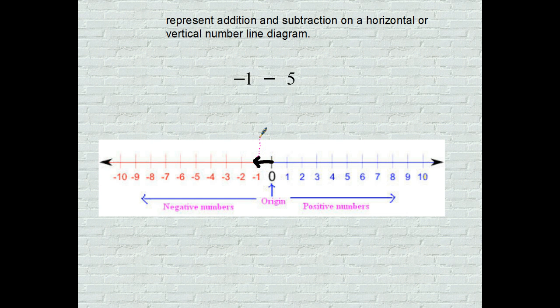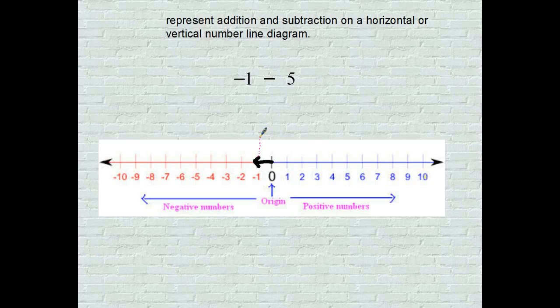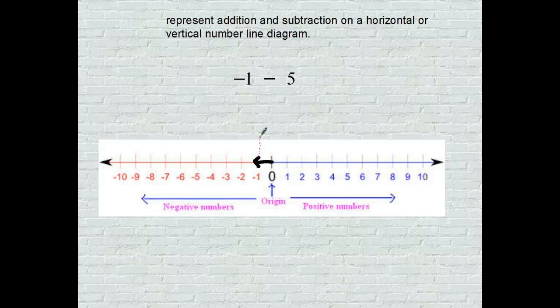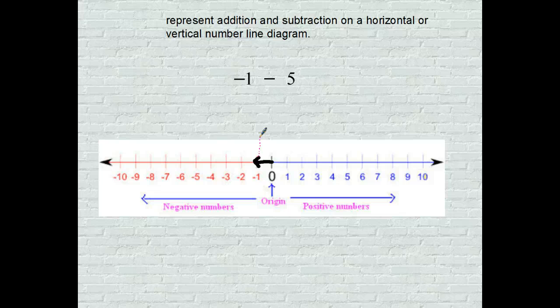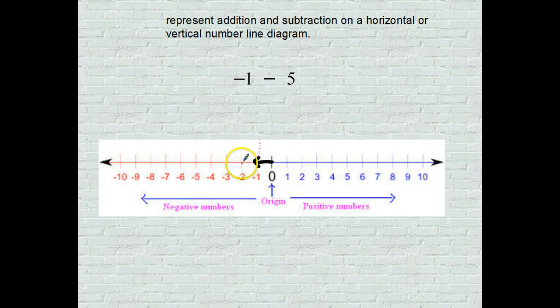Where are we going? We are going to the left 5. Anytime you subtract a positive number, you go to the left. So let's count 5 units to the left: 1, 2, 3, 4, 5.